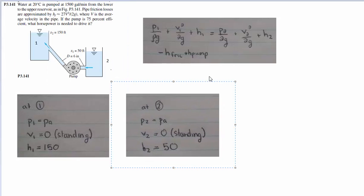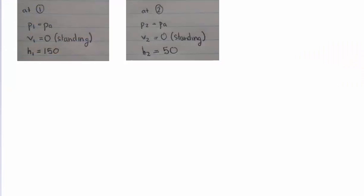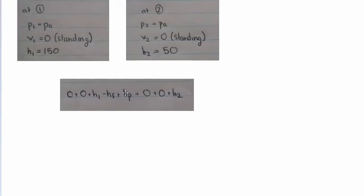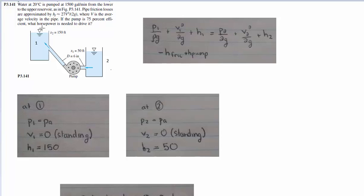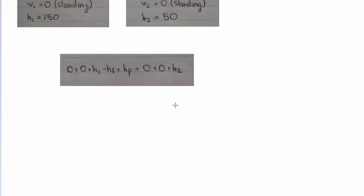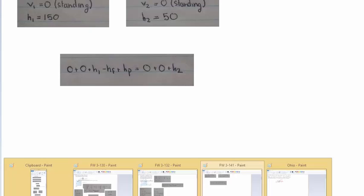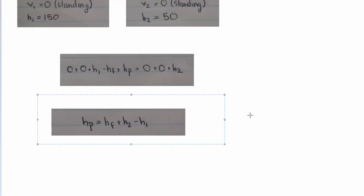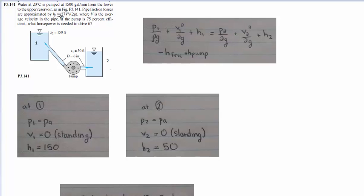At point 2, we're once again at atmospheric pressure, in a reservoir so velocity is zero, and we're told the height. This makes our final equation fairly simple. We're asking for the horsepower of the pump, so we solve for HP. We're given the two height values — 150 and 50 — and a friction head loss expression. Since there's a velocity in that expression and we're given a flow rate, we use the continuity equation trick: V equals Q over A.